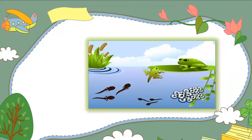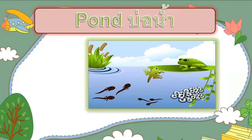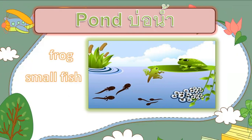How about these tadpoles? Tadpoles are the babies of frogs. They live in a pond — their habitat is pond. When they grow and become frogs, they can live on land or water or in the pond. Other animals that live in a pond are frog, small fish, and tadpole.